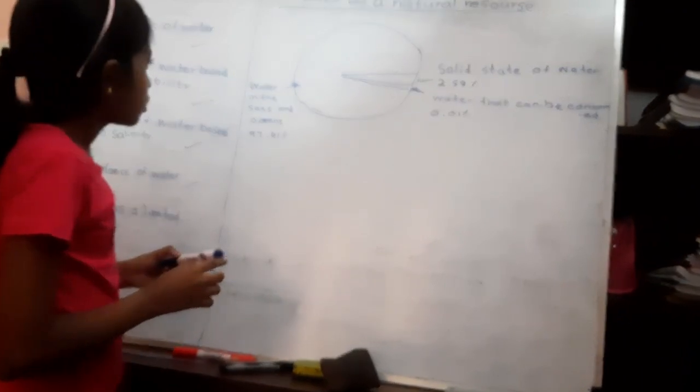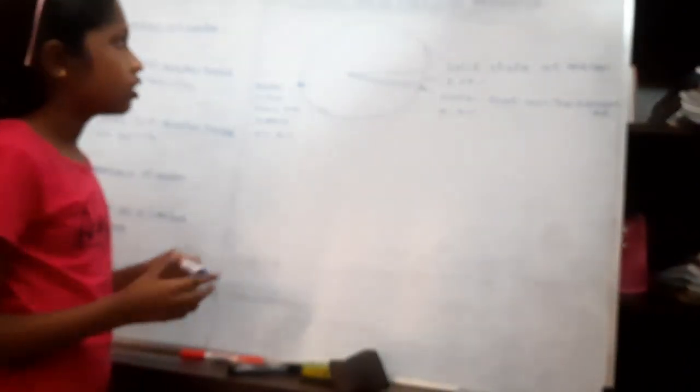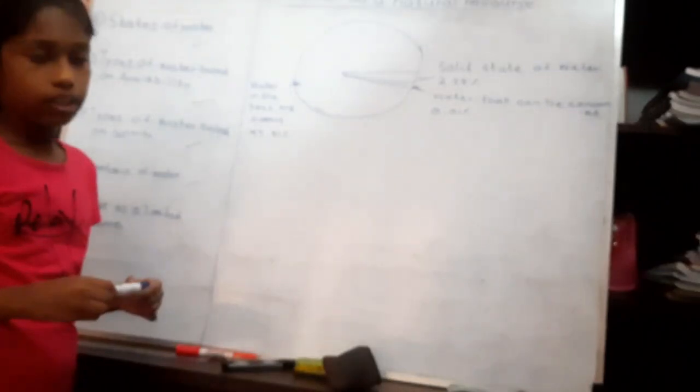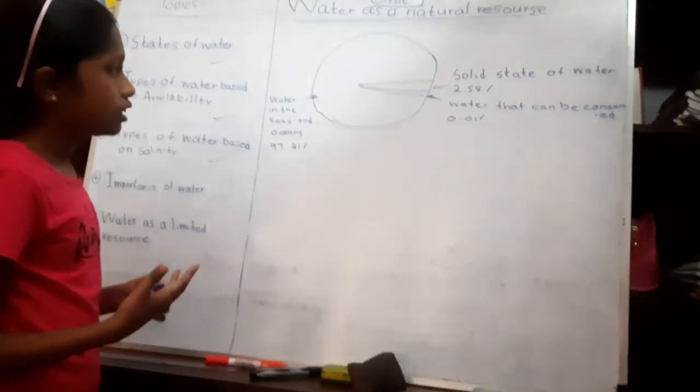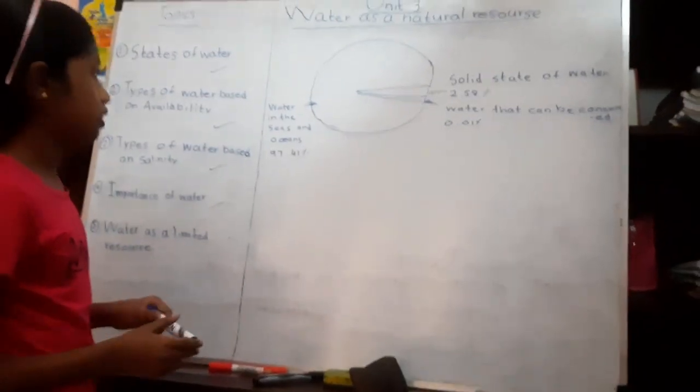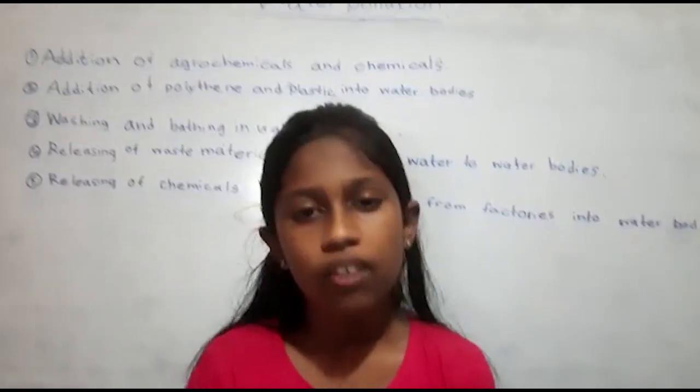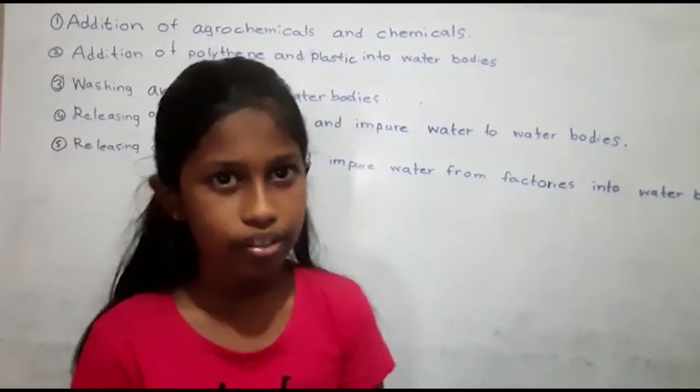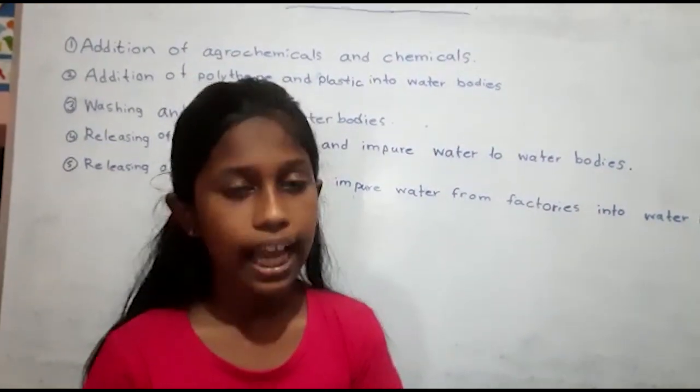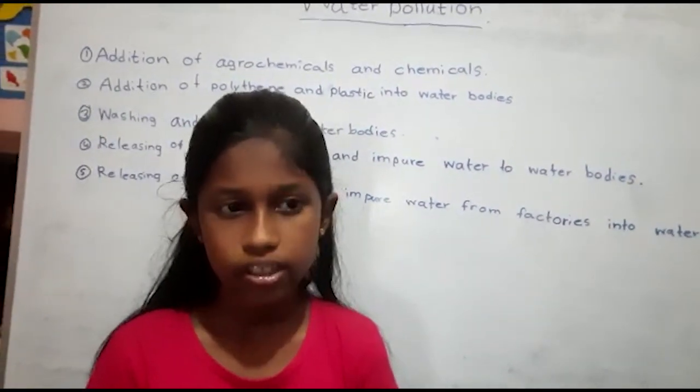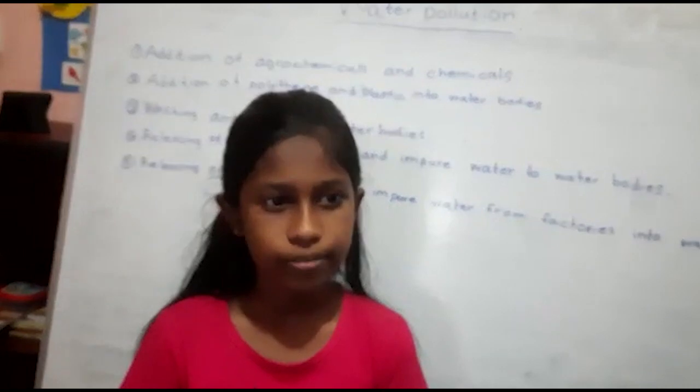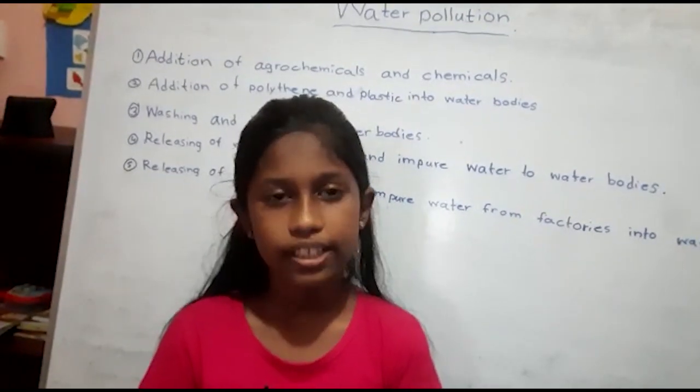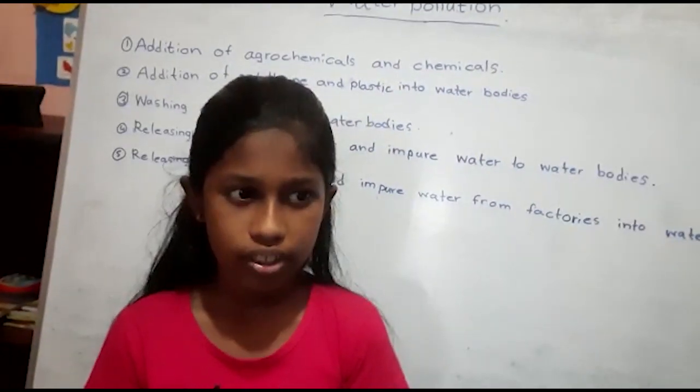Some human activities cause water pollution. What is the meaning of water pollution? Water pollution is addition of waste materials to water till it becomes unsuitable for consumption.